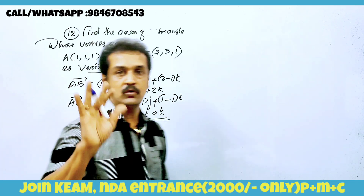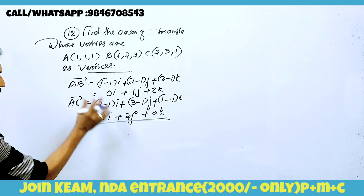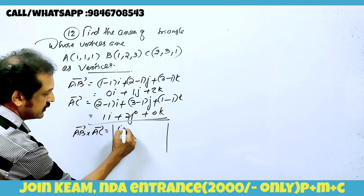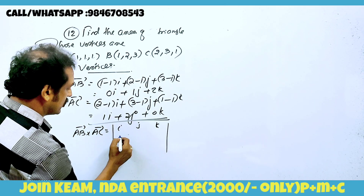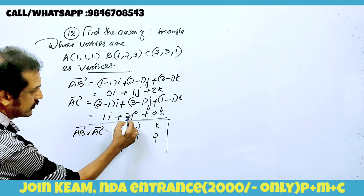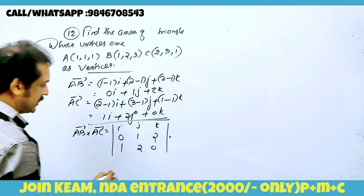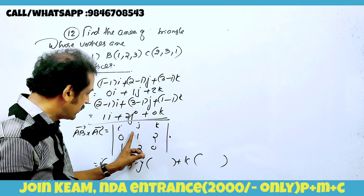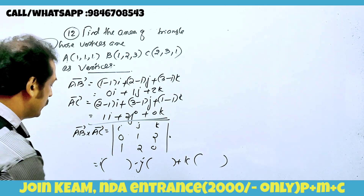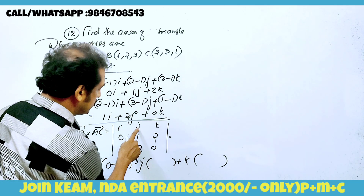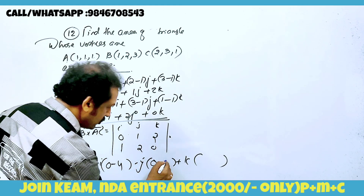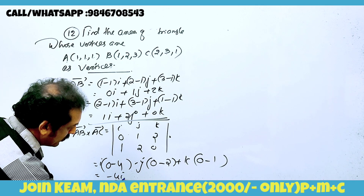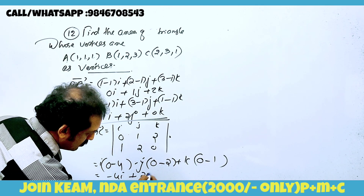Now we cross these vectors: AB cross AC. The determinant is [i, j, k / 0, 1, 2 / 1, 2, 0]. Expanding: i(1×0 - 2×2) - j(0×0 - 2×1) + k(0×2 - 1×1). That gives i(0 - 4) - j(0 - 2) + k(0 - 1) = -4i + 2j - k.